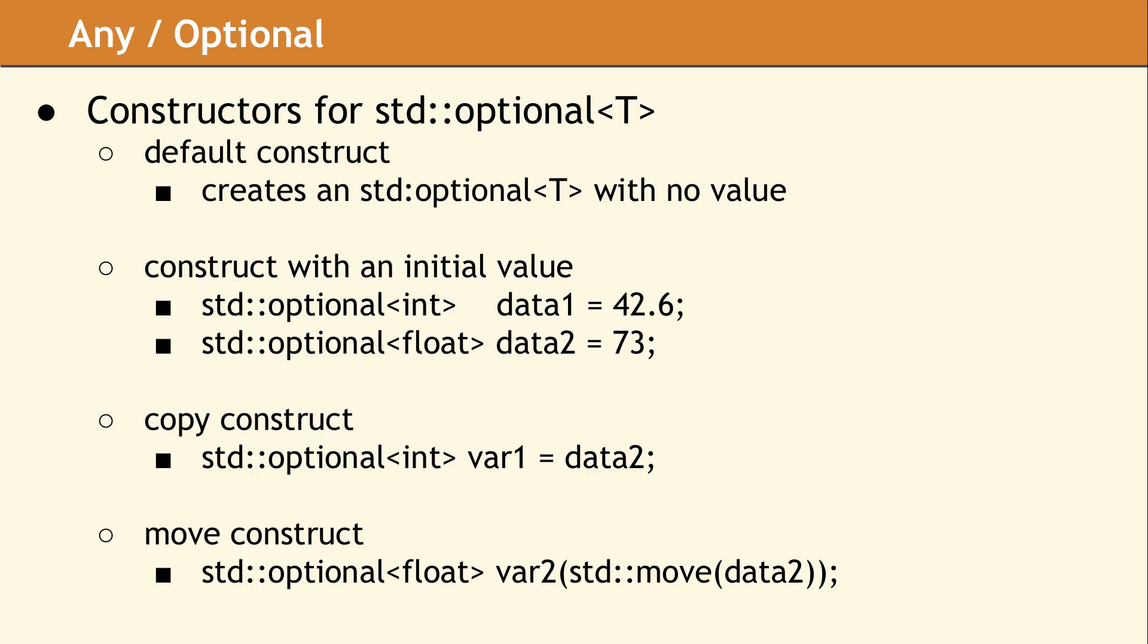An optional value can be copy constructed from another optional with a compatible data type. In our example for the copy constructor, the value 73.0, which was stored in Data2, will be truncated to the integer 73 and stored in var1 as an int. The optional class also supports move construction.